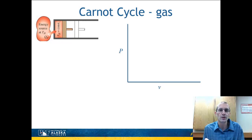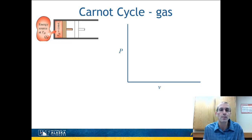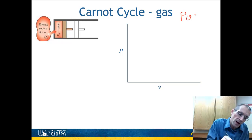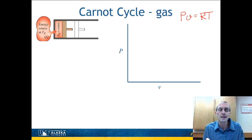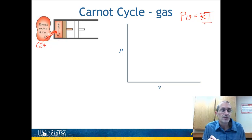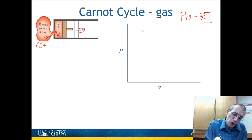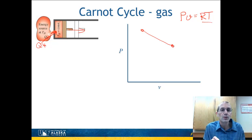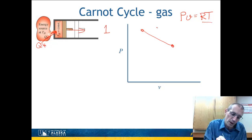The Carnot cycle is important because, as we discussed with the second law of thermodynamics, it puts an upper bound on the efficiencies of all cycles. For a gas, we'll use an ideal gas with the relationship PV = RT. The first step of this cycle is we put energy QH into our working fluid while keeping the temperature constant at TH. If T is constant, P and V have an inverse relationship, so as energy is added, volume increases. On a PV diagram, the pressure decreases as volume increases — this is step one.